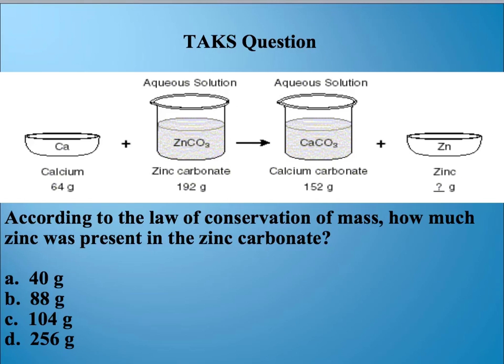Here's a little different kind of question that you might see with the law of conservation of mass. So here we've got calcium, 64 grams of calcium, combining with zinc carbonate, 192 grams, and that is going through some sort of chemical reaction and producing 152 grams of calcium carbonate plus unknown amount of zinc.